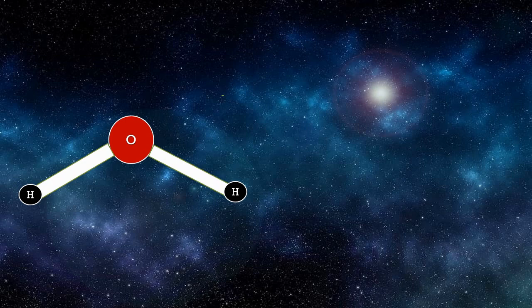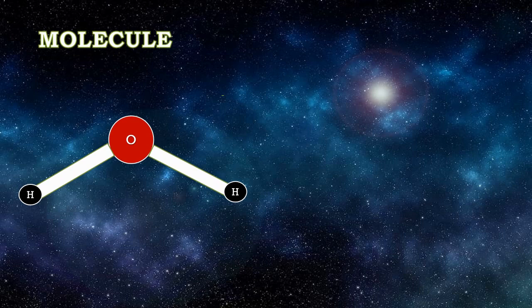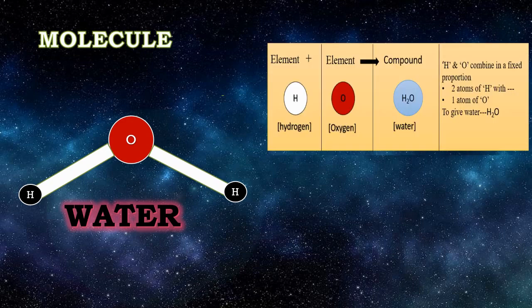Elements combine to form molecules. Molecules containing two or more atoms of different kinds chemically combined together are called molecules of a compound. For example, the water molecule H2O — oxygen atom O combines with hydrogen atoms to form H2O. Two atoms of hydrogen combine with one atom of oxygen in a fixed proportion to give water, H2O.